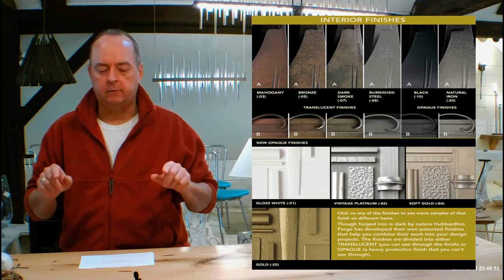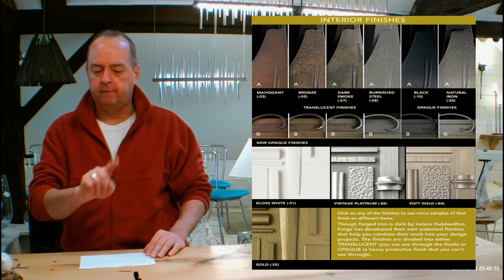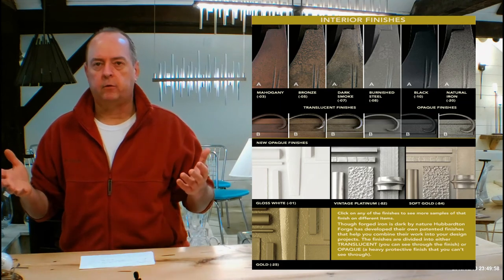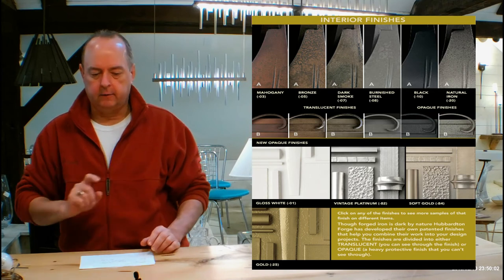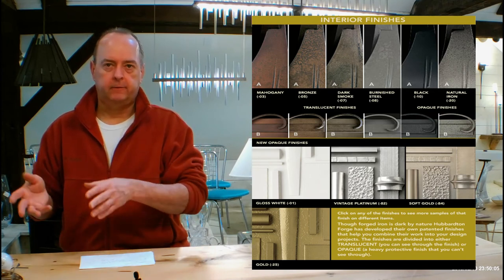When you're done with all that, come back down to that chart. You can click on any of those pictures and see a lot more samples of Hubberton forged fixtures in that finish. If you want to see a bunch of stuff in dark smoke, click on dark smoke. If you want to see a bunch of stuff in vintage platinum, do the same.